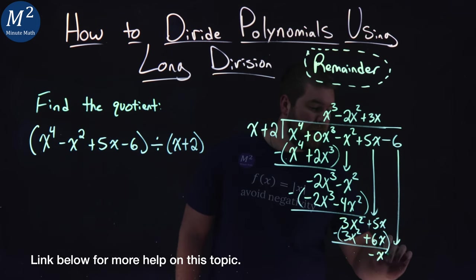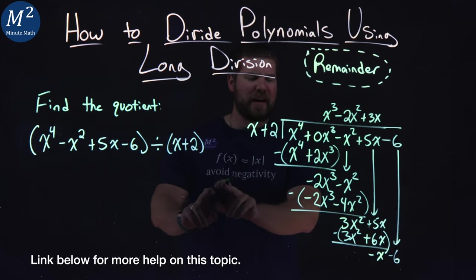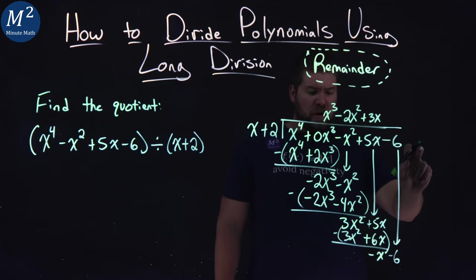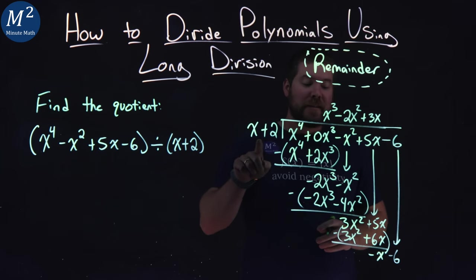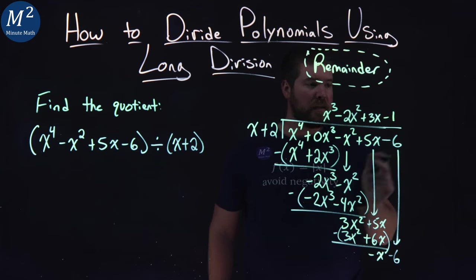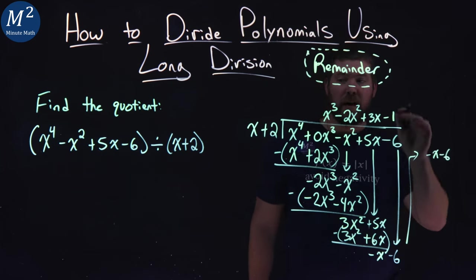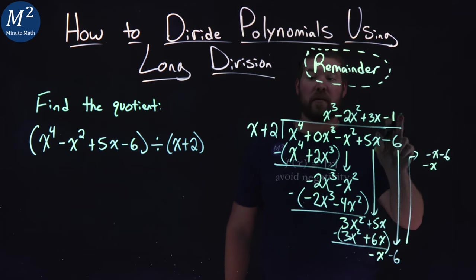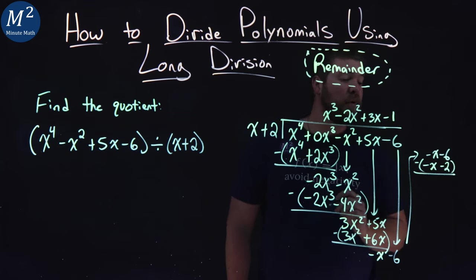Lastly, we want to bring down minus 6 right there. Now I think I'm running out of room, so I'm going to continue it right here. Moving on from there, what times x gives me negative x? That's negative 1. Negative 1 times x is—I'll rewrite that part here so you can see it—x minus 6. So negative 1 times x is negative x. Negative 1 times 2 gives me negative 2.